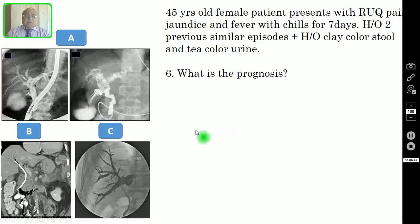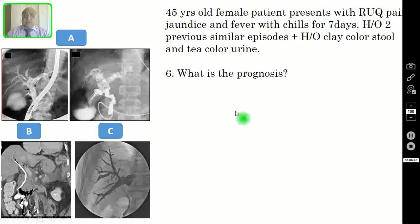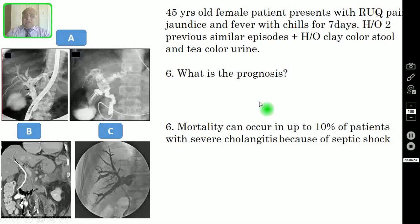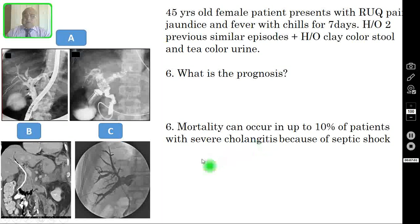Question number six: what is the prognosis of cholangitis? Ascending cholangitis can be treated with high-dose antibiotics, but suppurative cholangitis requires drainage of pus. Mortality can occur in up to 10% of patients with severe suppurative cholangitis, as these patients can die from septic shock.